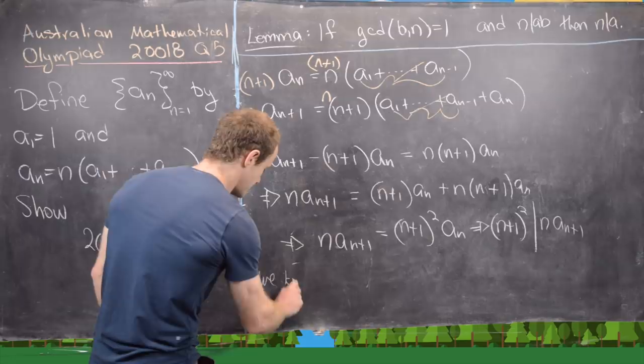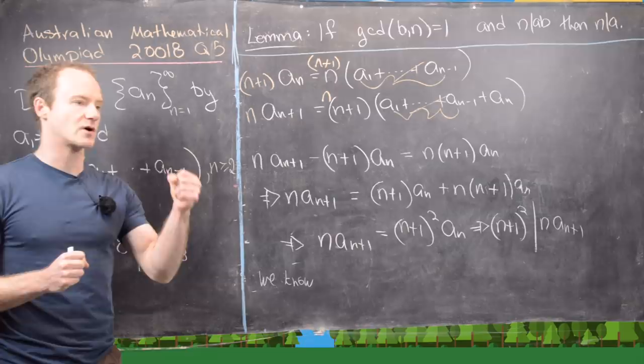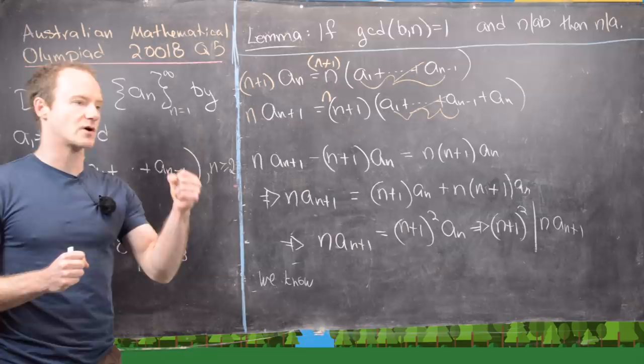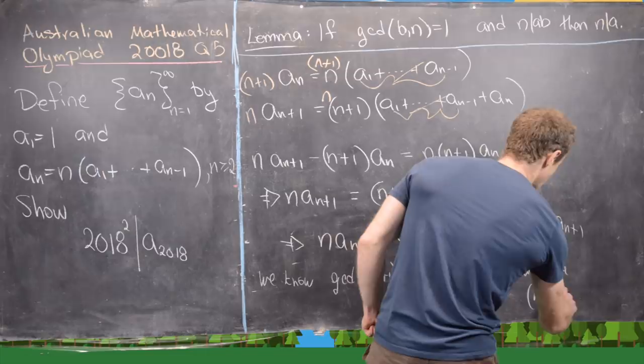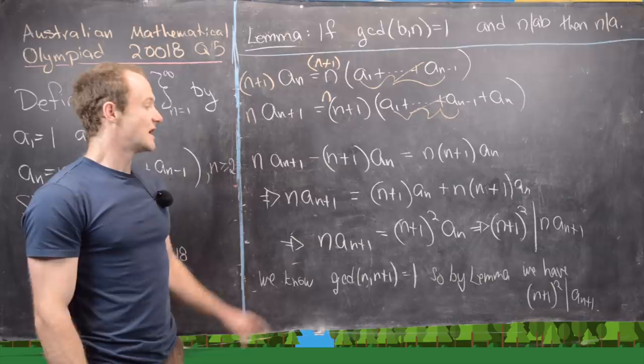Next we know that sequential numbers are relatively prime. In other words n and n plus 1 are relatively prime. So we can write that as gcd of n times n plus 1 equals 1. So by our lemma we have n plus 1 quantity squared divides a_{n+1}.